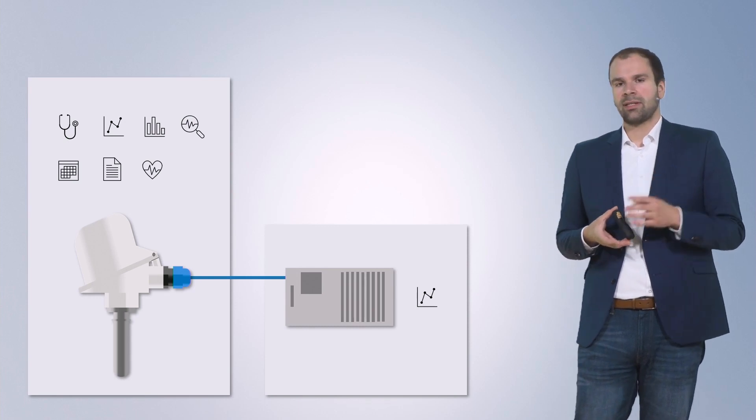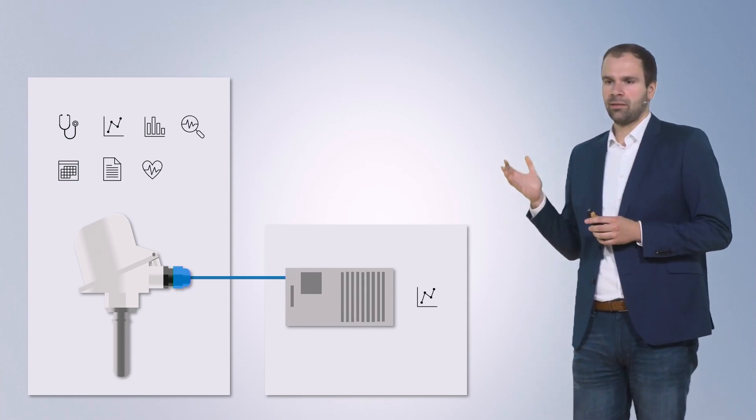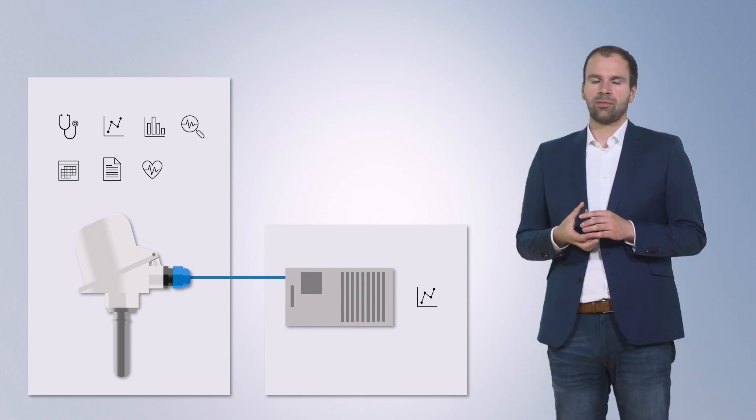For example, here we have a smart field device — a temperature sensor — that already provides a lot of data. Typically, only the process value, in this case the temperature, is read from the device and used by the DCS system for process control. But there is a lot of other information the device provides, for example about the condition of the device itself, or about process quality. That kind of information is already lost on this first step.